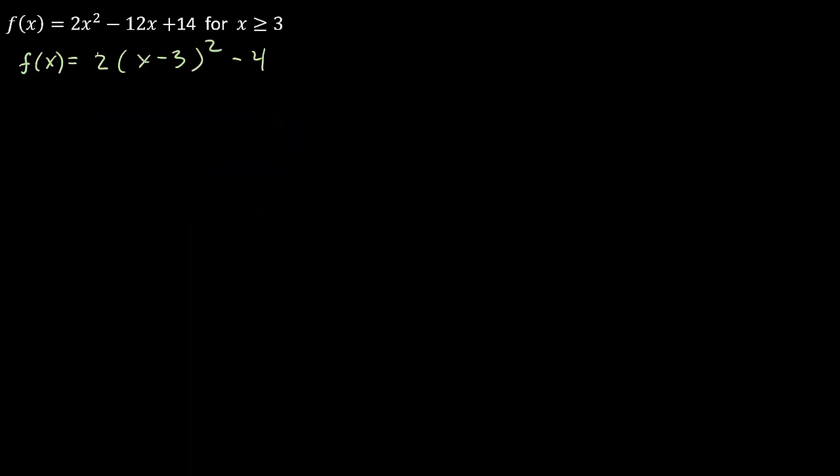Alright, so just gave myself a little more room. Alright, so remember how to find the inverse. We change the f(x) to y. Alright, and so that's y equals 2 times x minus 3 squared, minus 4. And then we swap the x's and y's, so I get x equals 2 times y minus 3 squared, minus 4.